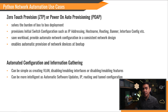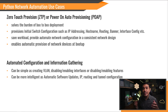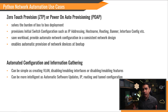Zero-Touch Provisioning, ZTP, or Power-on-Auto-Provisioning, POAP — it still depends on which vendor you are using. Anyway, this solves the burden of box-to-box deployment, because normally you connect to the console of the network device to change the management IP address, and then continue the network device configuration manually. In ZTP, we skip this process, as it automatically provisions initial switch configurations such as IP addressing, hostname, routing, banner, interface configuration, and many more. This saves workload by providing automated network configuration in a consistent network design — we are talking about spine and leaf topology.